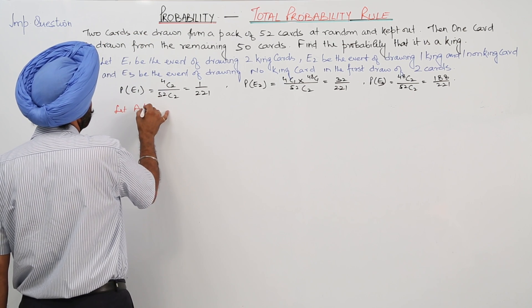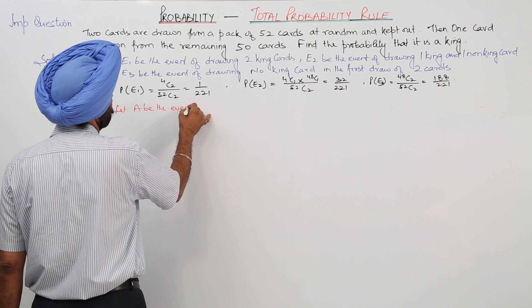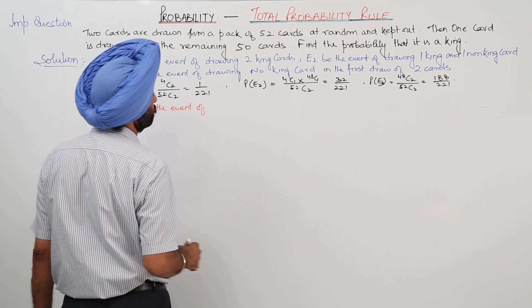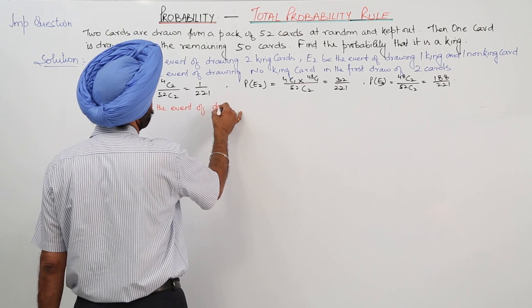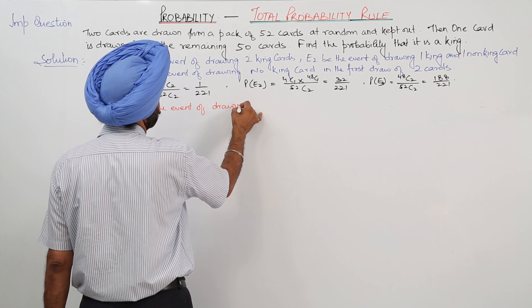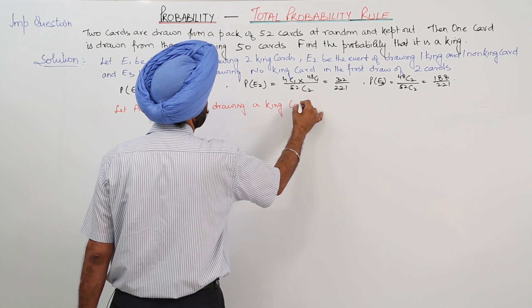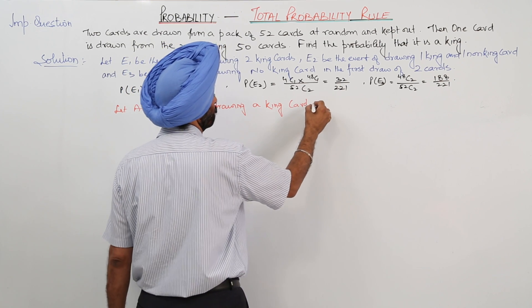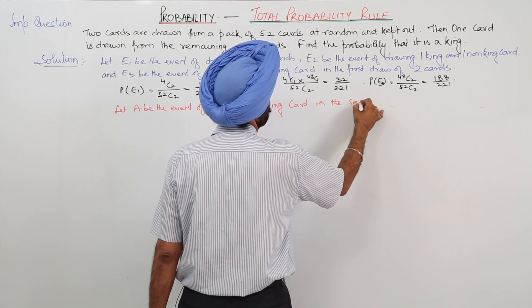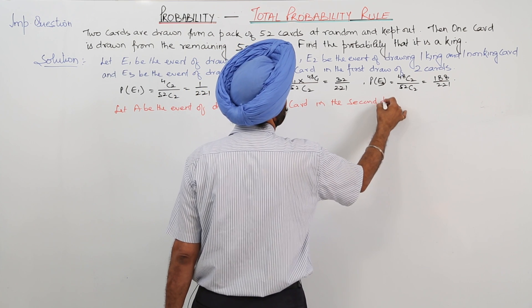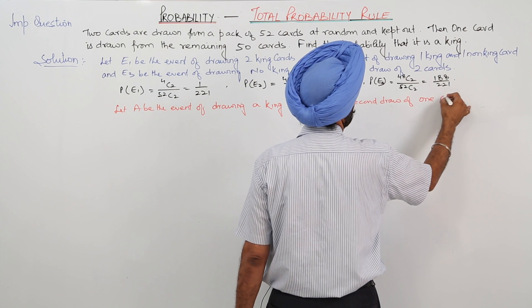Let A be the event of drawing a king card in the second draw of 1 card.